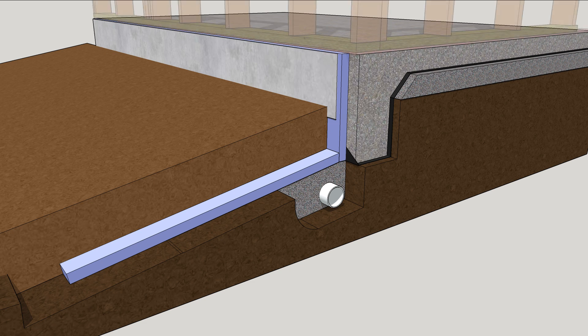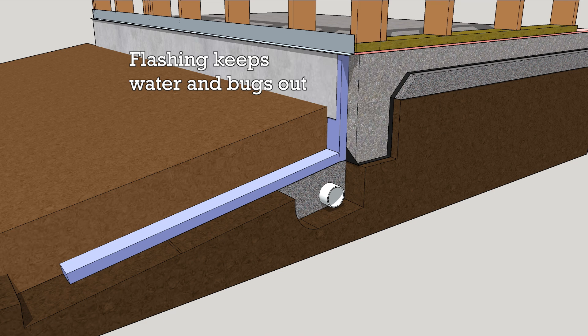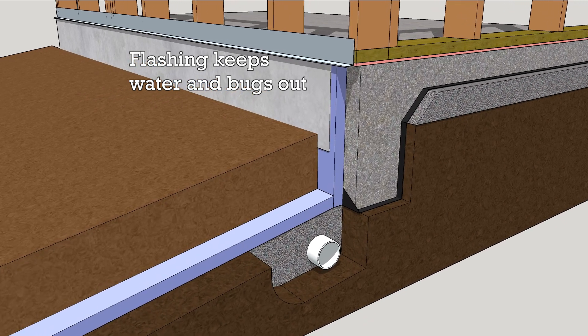Frame the walls on top of the slab, placing a piece of flashing above the insulation to keep bugs and water from sneaking in.